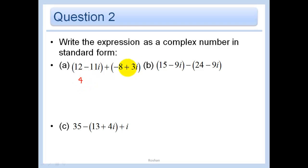And then you add up the imaginary part. So a negative 11 plus a 3 is a negative 8i. So that's the imaginary part. Again, the real number part, 15 minus 24 is negative 9. And then don't forget to distribute that negative sign. And negative 9 plus 9 is 0. So I just have a real number in this one. And then here, I'm going to remember to distribute this negative. So I would get 35 minus 13 is 22. And then minus 4i plus i is negative 3i. And that's my answer.